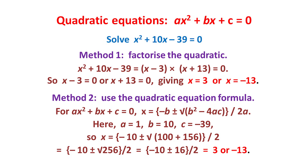The second method uses the familiar quadratic equation formula: x equals minus b plus or minus the square root of b squared minus 4ac, all divided by 2a. Here a is 1, b is 10, and c is minus 39. So x equals minus 10 plus or minus the square root of 100 minus 4 times 1 times minus 39, which is plus 156, all divided by 2. Now 100 plus 156 is 256, with square root 16, and so the answers are minus 10 plus or minus 16, all divided by 2, which give us x equals 3 or minus 13 as before.